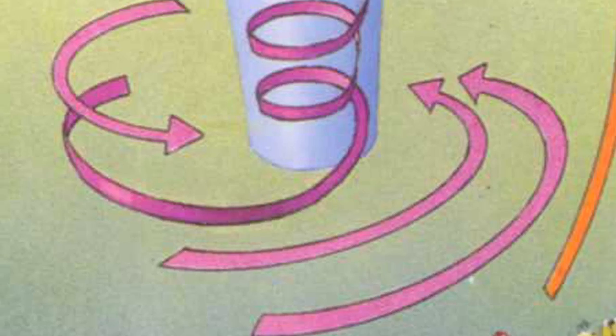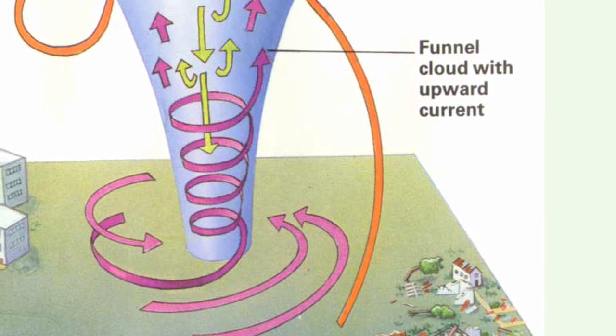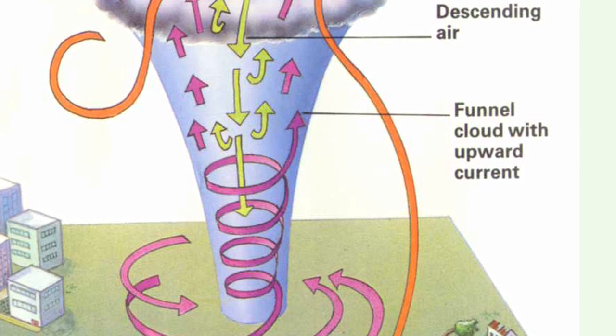The typical tornado damage path is about 2 to 3 kilometers, with a width of around 50 meters, but have been seen as narrow as only 10 meters. The largest tornado path widths can exceed a full kilometer.